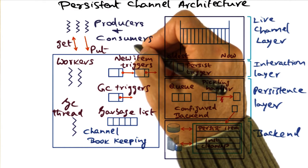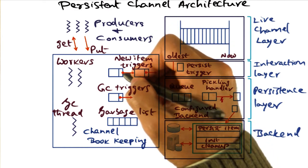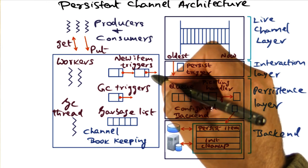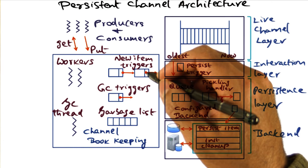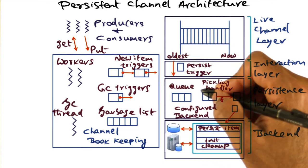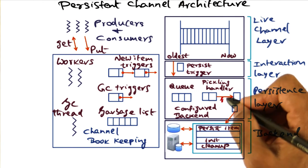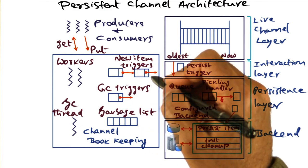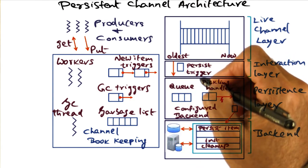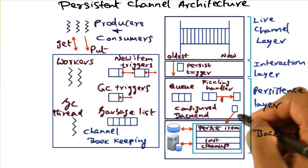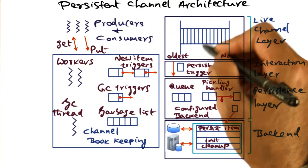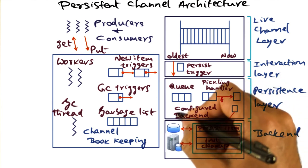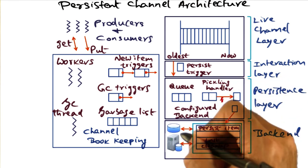The nice property is that all of these persistence activities happen unbeknownst to the user. All the user has done is that at the creation of a channel, they specified certain properties to associate with the channel — for example, that any items beyond the last 30 seconds should be persisted on storage, and when persisted, apply a specified function. Once that is done, the heavy lifting during runtime is all handled under the covers by the runtime system, which takes items from the channel, pickles them using the specified function, and uses one of the configured backends to push those pickled items onto persistent storage.